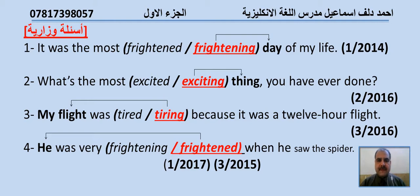Number two: What's the most excited/exciting thing you have ever done? — second attempt 2016. We choose exciting, present participle, because it describes a thing — we have 'thing' here. نختار exciting لأنه يصف شيئاً. صارت الجملة: What's the most exciting thing you have ever done?